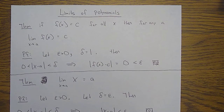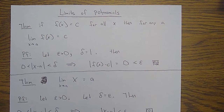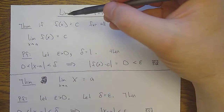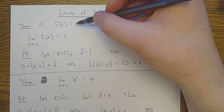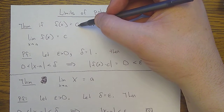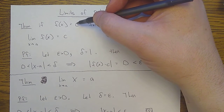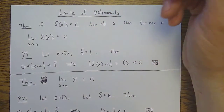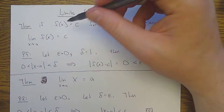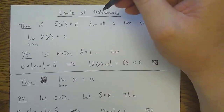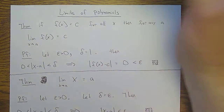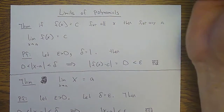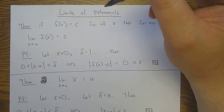First we have to do the easiest polynomials. Here's the easiest polynomial in the world — this is a constant function, f of x equals c. These are the functions whose graph is just a horizontal line, like f of x equals one.